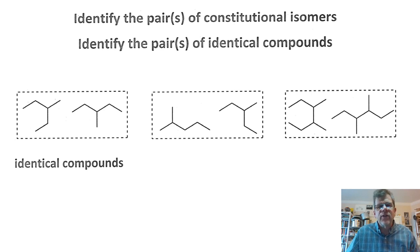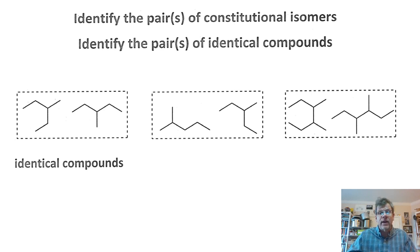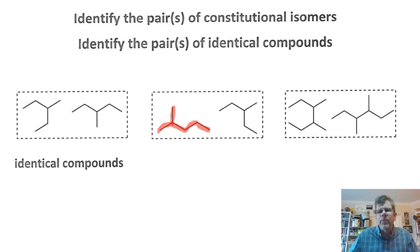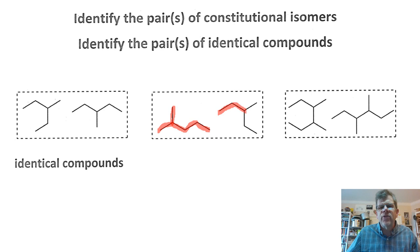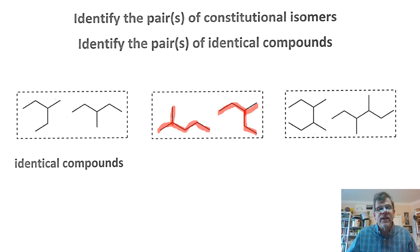For the second pair, let's apply the same approach. This first structure has a parent chain of five carbons with a one-carbon branch on the second carbon in from an end. For the second structure, carefully finding the longest continuous carbon chain, we do have a branch, but it has a different connectivity — same molecular formula, different connectivity. So these must be related as constitutional isomers.